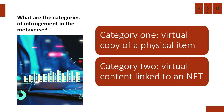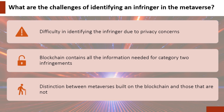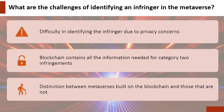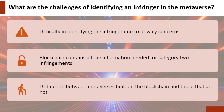What are the challenges of identifying an infringer in the metaverse? Identifying an infringer can be challenging due to privacy concerns. For category 2 infringements, the blockchain contains all the information needed. However, for category 1 infringements, where a virtual copy of a physical item is created, a distinction must be made between metaverses built on the blockchain and those that are not.